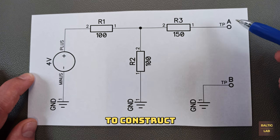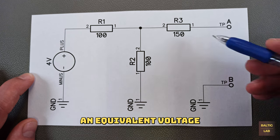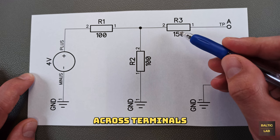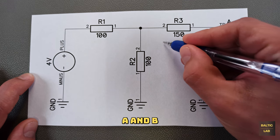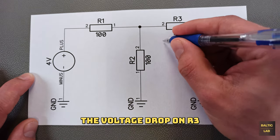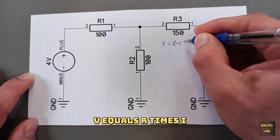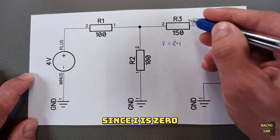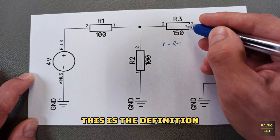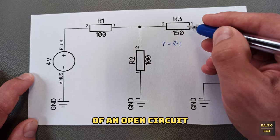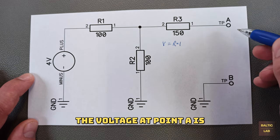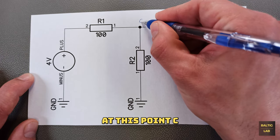The first thing we have to determine to construct an equivalent voltage source is the voltage across terminals A and B. Working backwards, the voltage drop on R3 is equal to standard ohms law V equals R times I. Since I is zero in this case, this is the definition of an open circuit, the voltage at point A is equal to the voltage at point C.